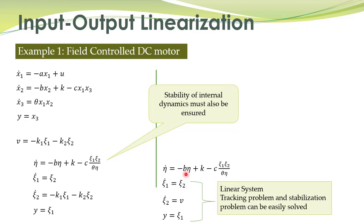In the last lecture we talked about input-output linearization. We learned that if the relative degree rho is less than n, then by defining an appropriate state transformation we may convert a nonlinear system into normal form, and by definition of an appropriate control law we can obtain input-output linearization.